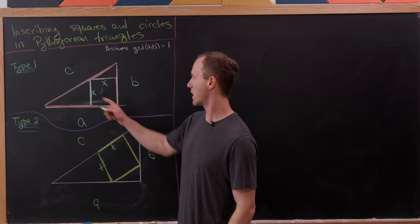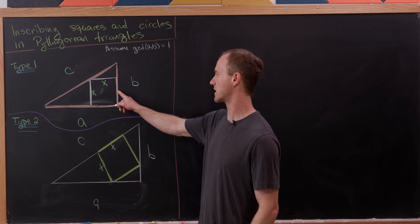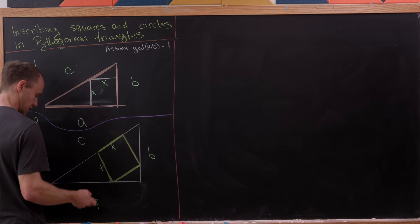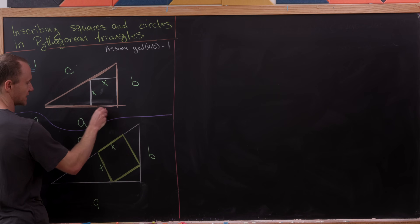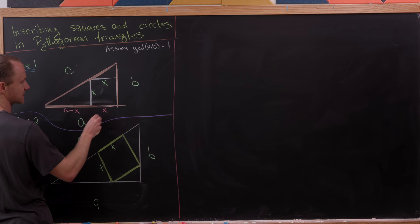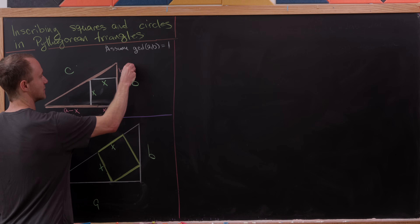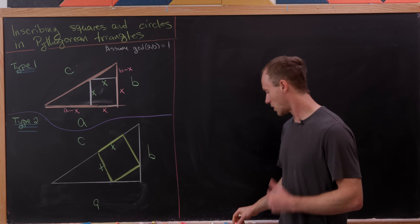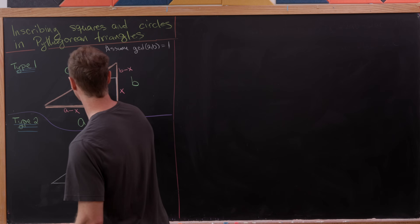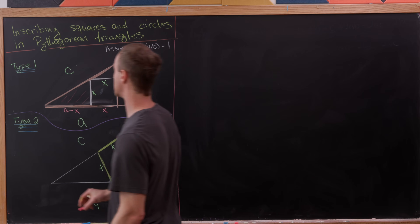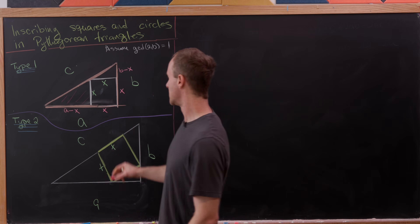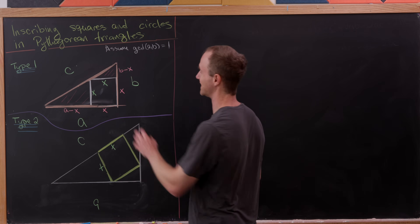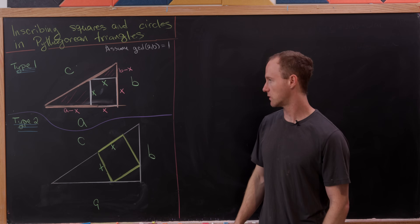For a square inscribed with sides along the legs, the side length is x. This makes the length along the base x, so the remaining base length is a minus x. The height of the square is x, leaving b minus x above it. The small triangle at the corner of the original right triangle is similar to the triangle above the square, which in turn is similar to the entire triangle.